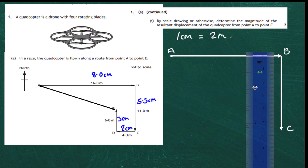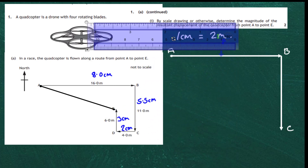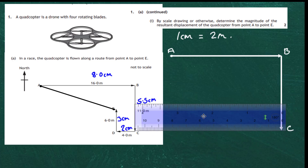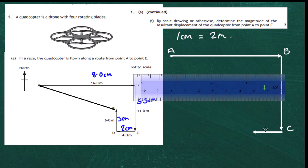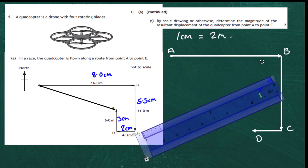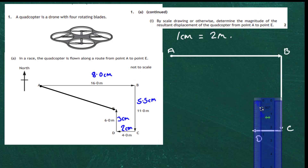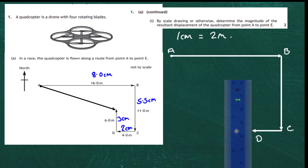We change the ruler position again for the next vector. Coming down, we measure off a distance of 2 centimetres — that's the C to D vector. Finally, we position the ruler at 90 degrees and come up 3 centimetres for the D to E vector, placing the mark there.